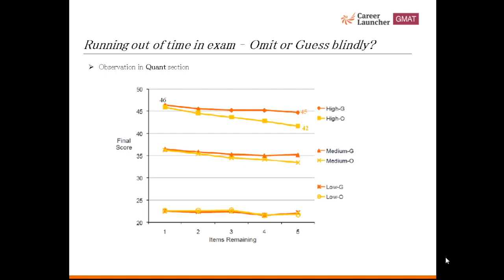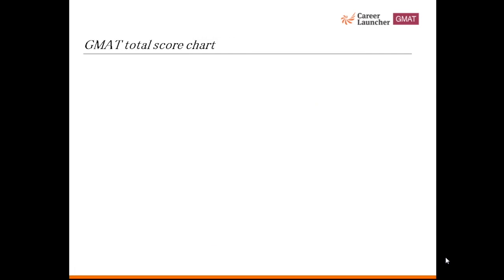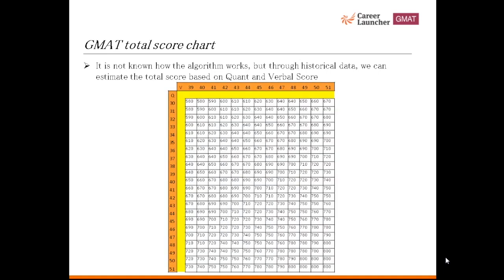It is not known how the GMAT algorithm works to calculate the total score, but through historical data we can estimate the total score based on quant and verbal scores. Keep in mind that this is just an estimate to get an idea of what total score you can expect based on quant and verbal scores. Actual scores may vary.